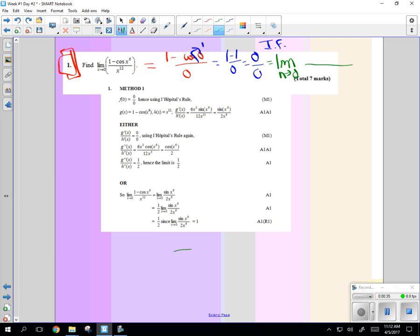0. What's the derivative of cosine x to the 6th? Not cosine to the 6th. Cosine x to the 6th.